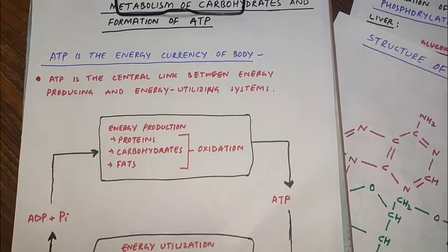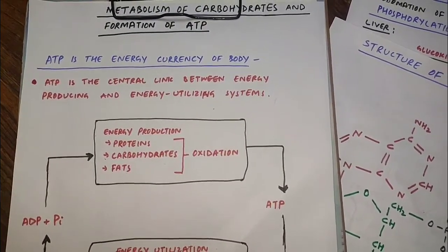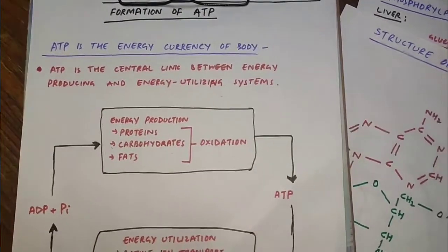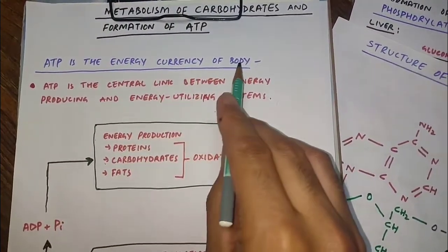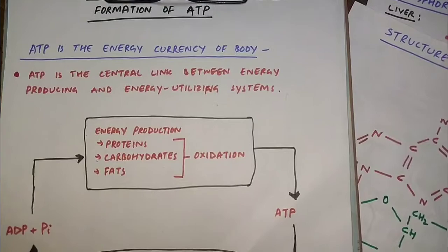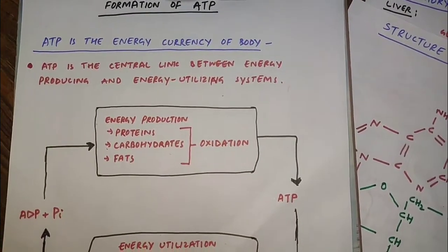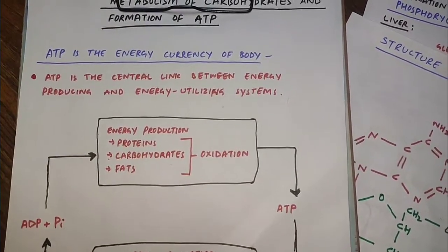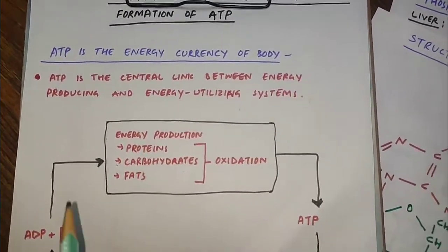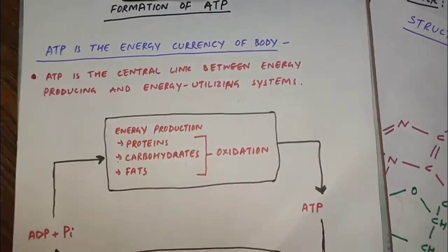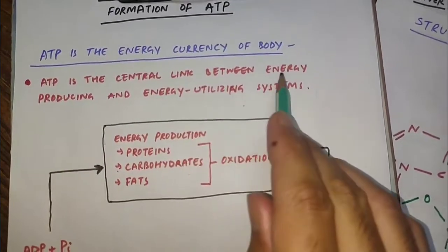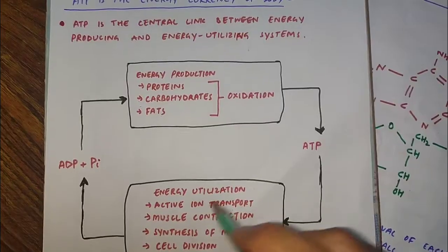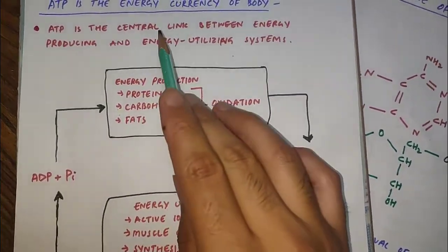First of all we will talk about ATP — adenosine triphosphate. As we have also studied in previous classes, ATP is the energy currency of the body. Whatever biological work is there, there is energy consumption, and that energy is ATP. ATP acts as a central link between energy producing and energy utilizing systems.